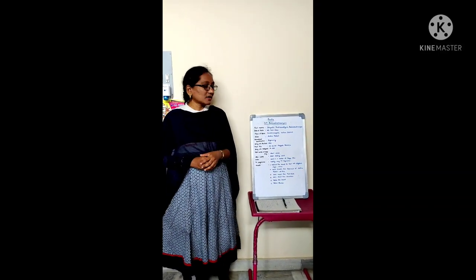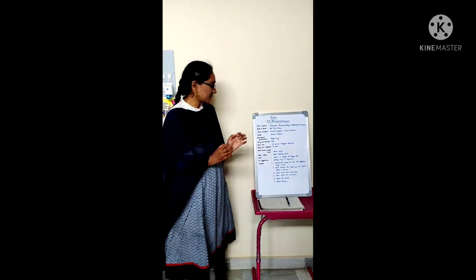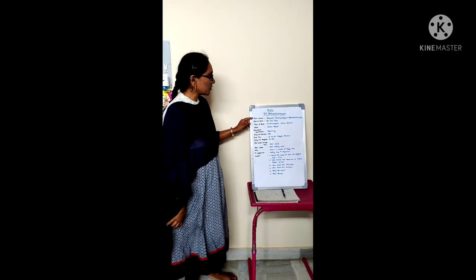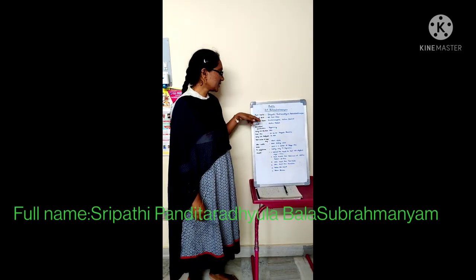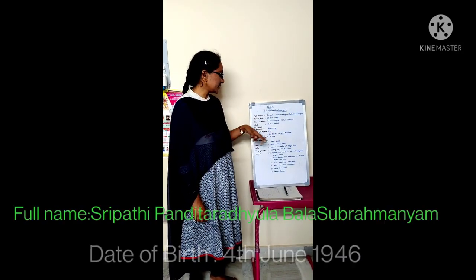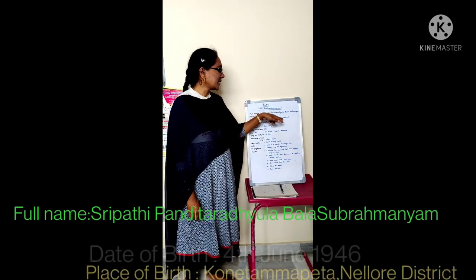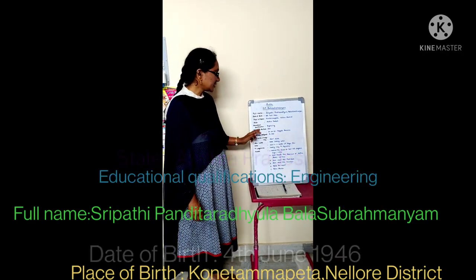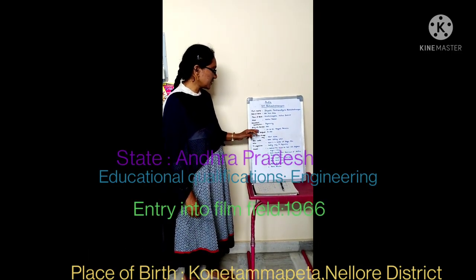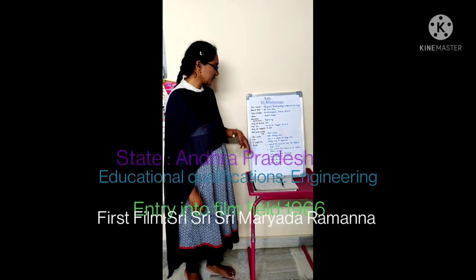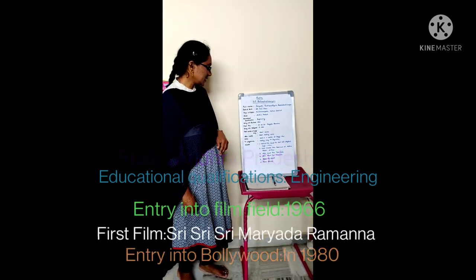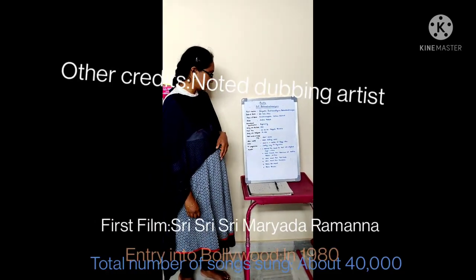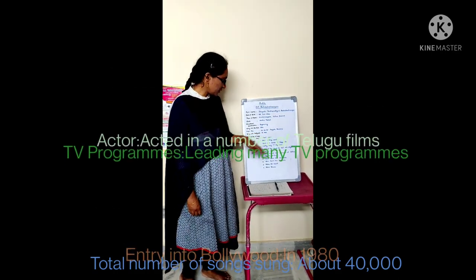The full name is Sripathi Panditarajula Balasubramanyam. Date of birth: 4th June 1946. Place of birth: Koritammapeta, Nellore District, Andhra Pradesh. Educational qualifications: Engineering. Entry into film field: 1966. First film: Shri Shri Shri Maryada Ramanna. Entry into Bollywood: 1980. Total number of songs: approximately 40,000.